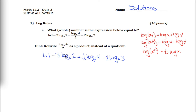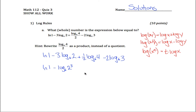It's that third log rule I'm going to apply here on the second, third, and fourth terms — kind of in reverse. Instead of three times log base six of two, that's log base six of two raised to the third power. Instead of one-half times log base six of four, that's log base six of four to the one-half power. And instead of two log base six of three, that's log base six of three to the second power.